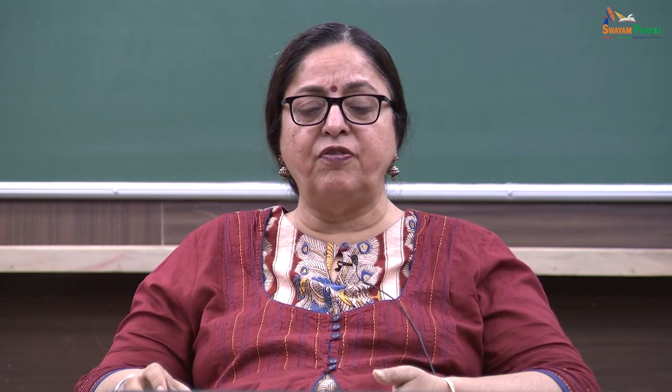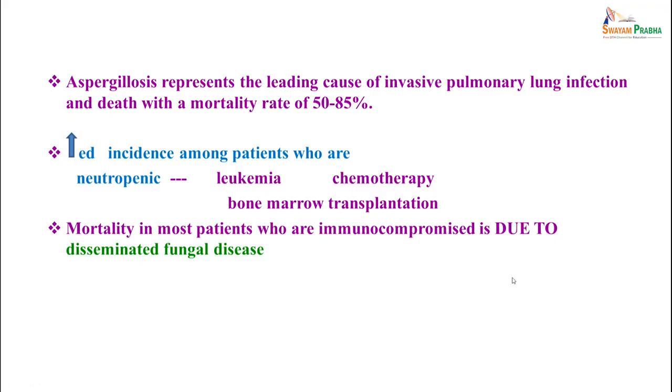Aspergillosis causes a spectrum of diseases in humans and animals, caused by members of the genus Aspergillus. It is present in the environment, growing on dead leaves, organic matter, and decaying vegetation. Aspergillus fumigatus is the commonest causative organism, with others including A. flavus, A. terreus, and A. niger. It represents the leading cause of invasive pulmonary infection with a mortality rate of 50 to 85 percent, seen especially in leukemia, chemotherapy, or bone marrow transplant patients.